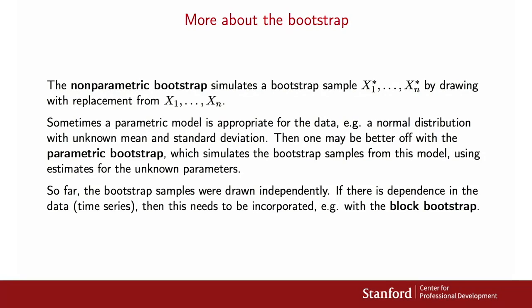This type of sampling works if the data are independent — that is, x1 to xn are really generated independently. But oftentimes there is dependence in the data, for example when the data are observed over time. There are bootstrap methods for dealing with that, but that's a specialized topic we don't discuss here.